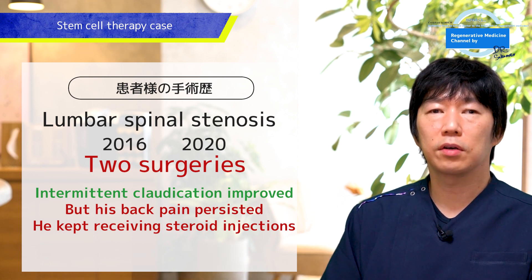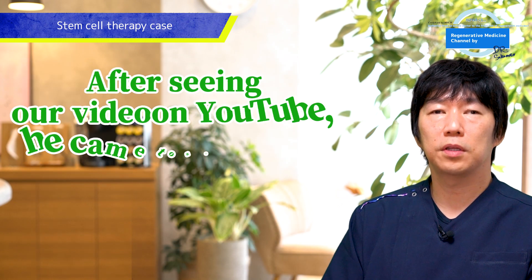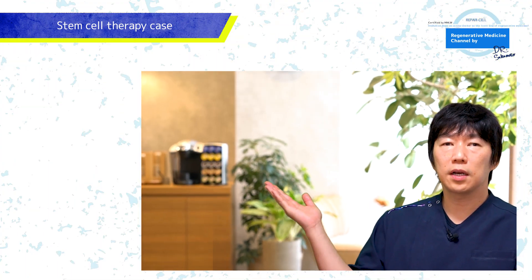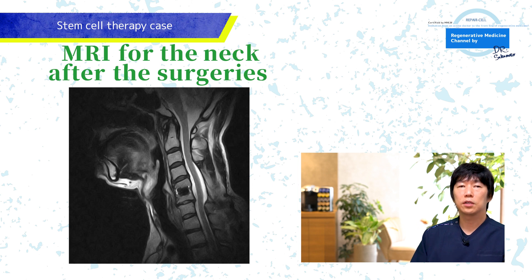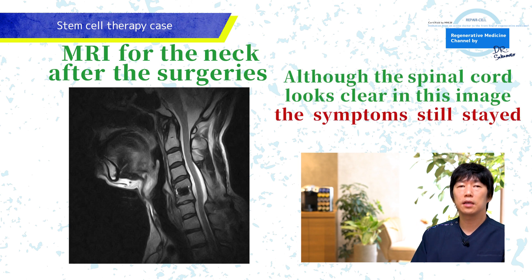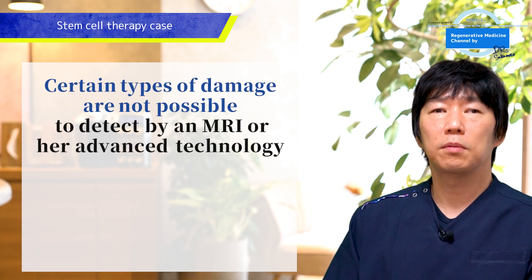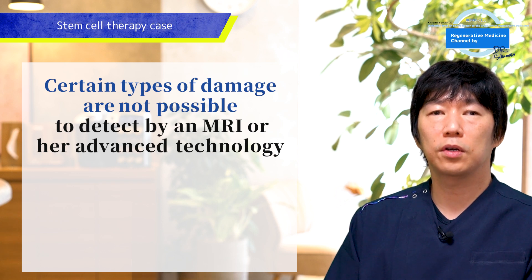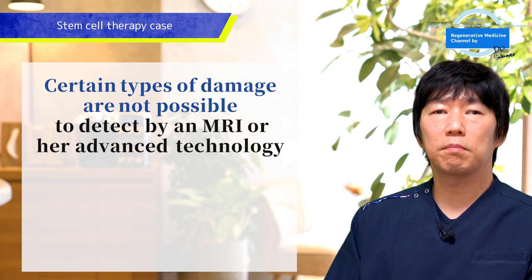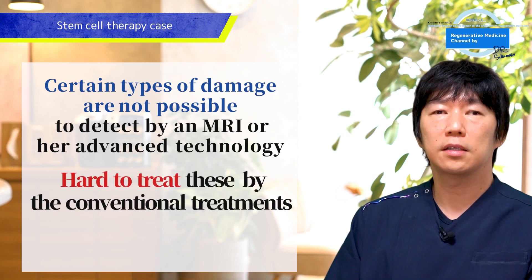He kept receiving a once-a-week steroid injection at a clinic, and after seeing our video on YouTube, he came to us to try regenerative medicine. This image is his MRI, taken after the surgeries. You can see the spinal canal is opened up and the major herniated discs are removed — the spinal cord looks clear in this image. But even if the MRI showed the spinal cord to be normal, the numbness in his hands still stayed. The damage causing the numbness or muscle weakness cannot always show, even on an MRI. Although surgery can remove obviously protruding parts of the disc, certain types of damage to the spinal cord are not possible to detect by MRI or other advanced technology and so are hard to treat.